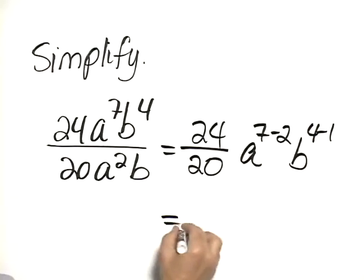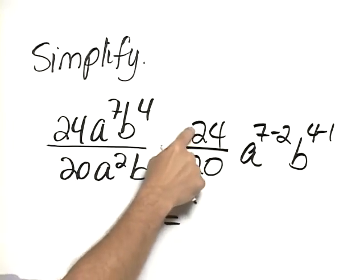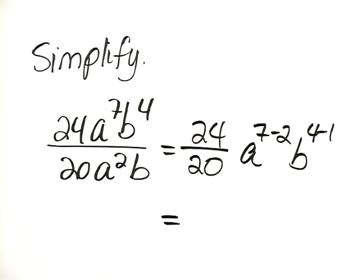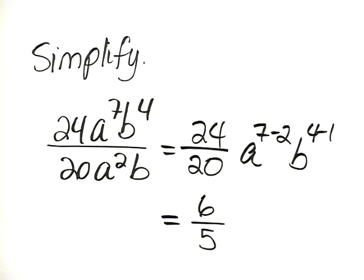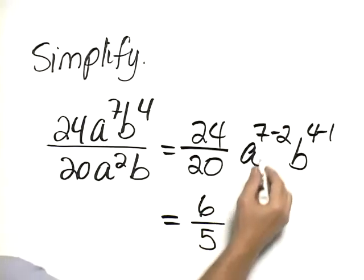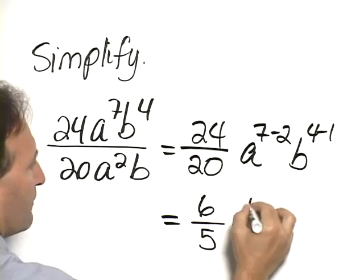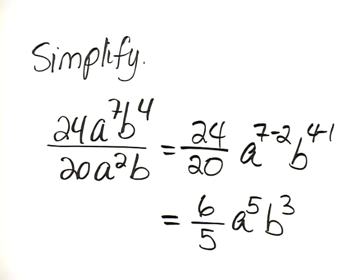Simplifying further, we'll notice that 24 and 20 both can be divided by 4. That leaves us with 6 over 5. Then, a to the 5th, b cubed.